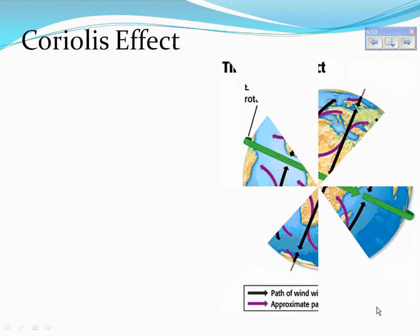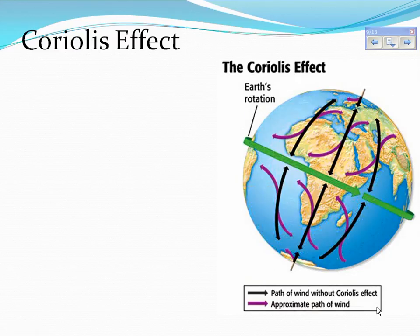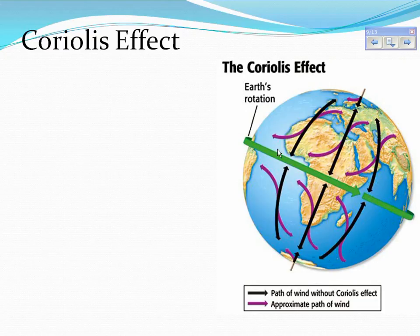According to the Coriolis effect, because the earth rotates, it also makes the wind and water rotate. The green arrow in the diagram shows the rotation of the earth on its axis. The black arrows show the path of wind without the Coriolis effect — without the earth spinning, winds would simply go from the poles straight to the equator. However, because the earth rotates, wind moves in a curved path, shown by the purple lines.